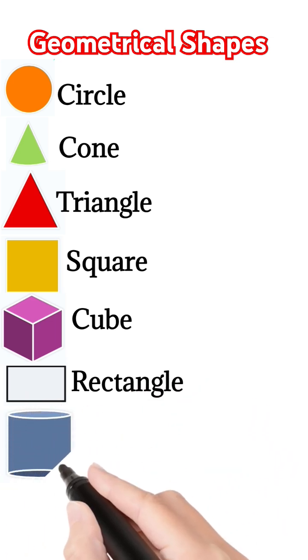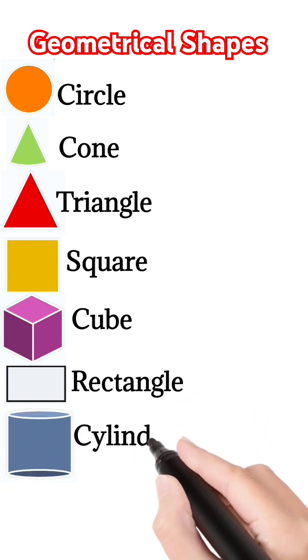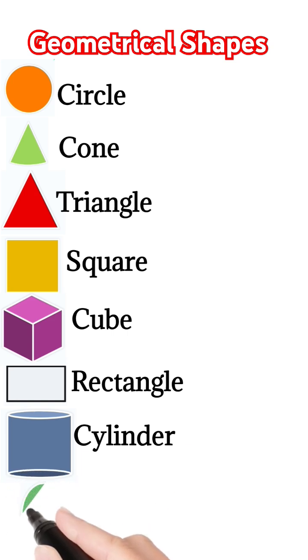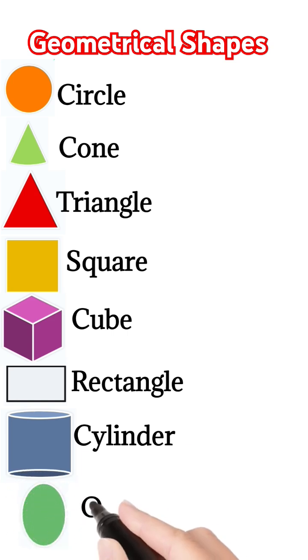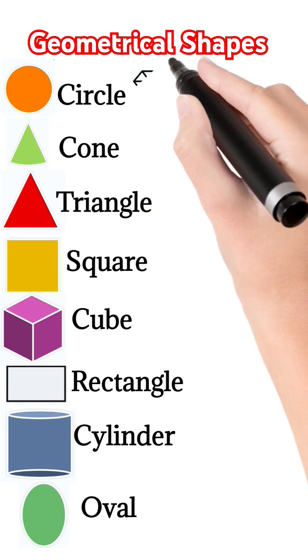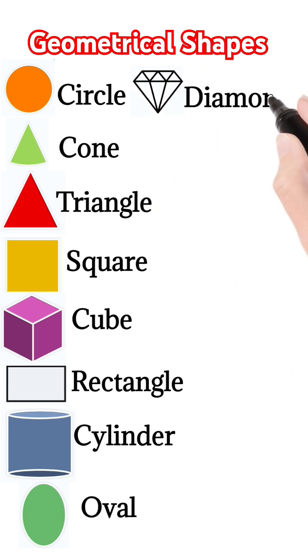The next one is cylinder, c-y-l-i-n-d-e-r, cylinder. The next one is oval, oval. Like the shape of the egg.